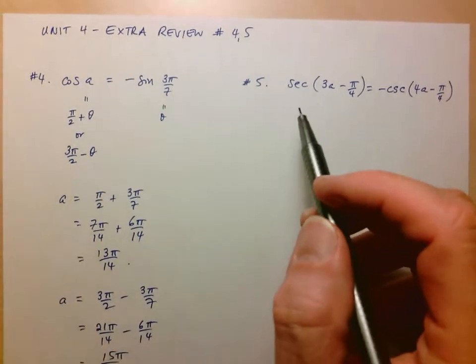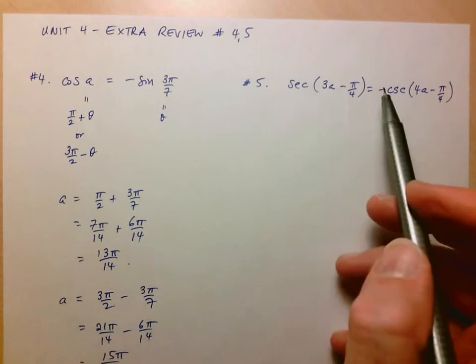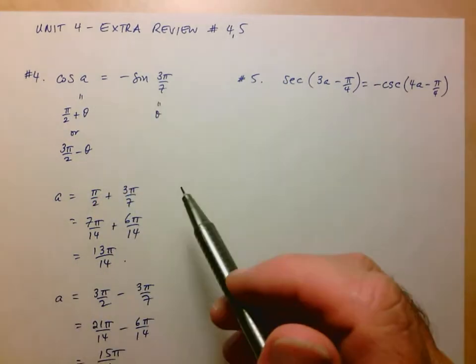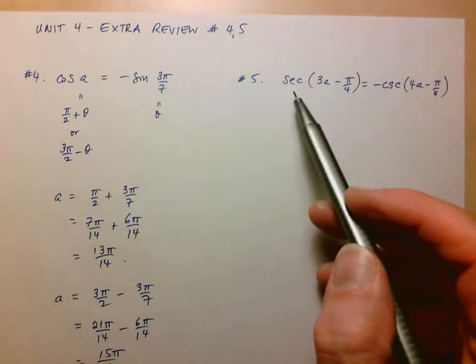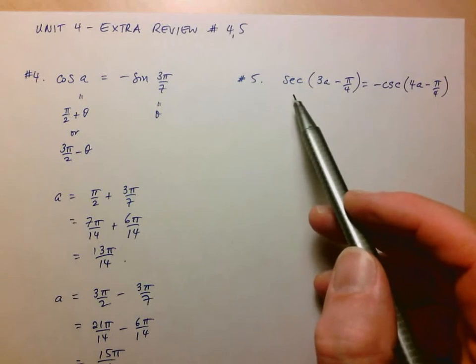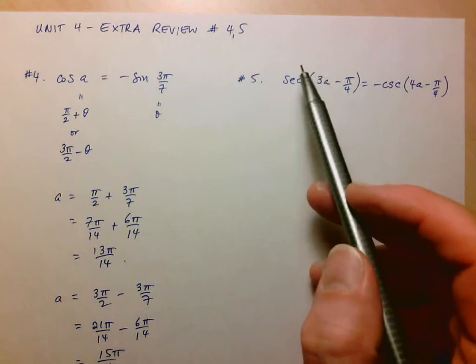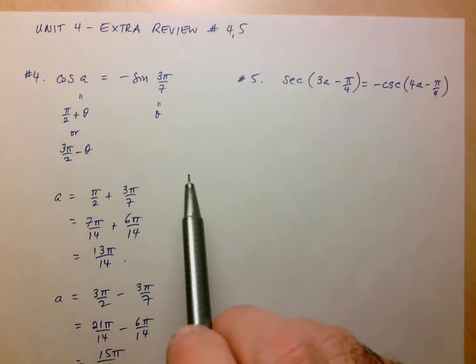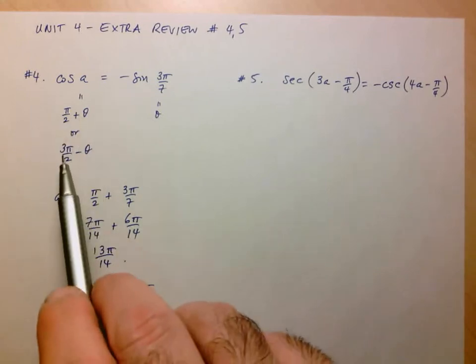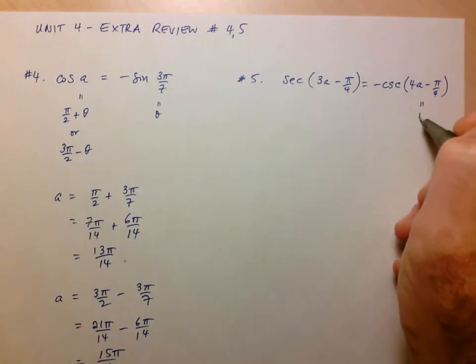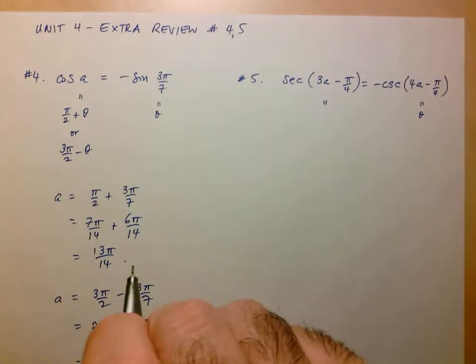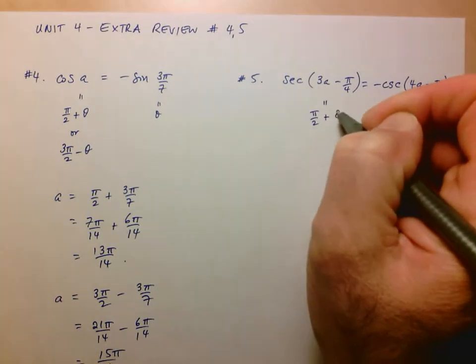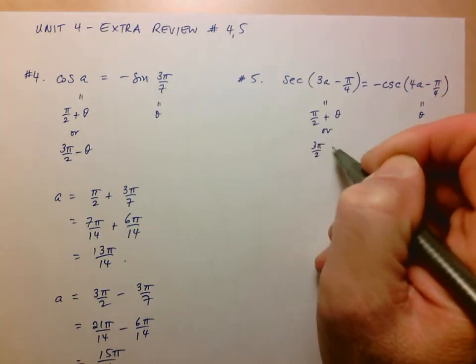We're going to do something very similar to number 5. Now here, it's a secant value that's the negative of a cosecant. But essentially, this is the exact same relationship that we're looking at because the reciprocals of numbers don't change signs. So here, this is like saying, when is a cosine value equal to the negative of a sine value? And it's in the exact same scenario: π over 2 plus theta or 3π over 2 minus theta.